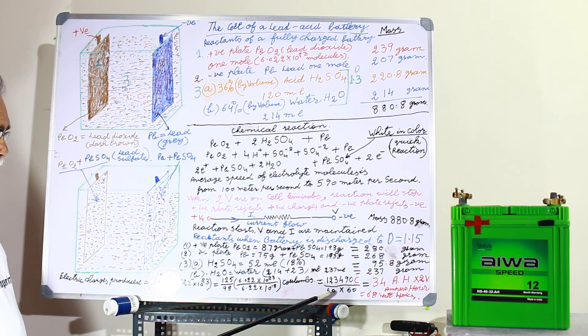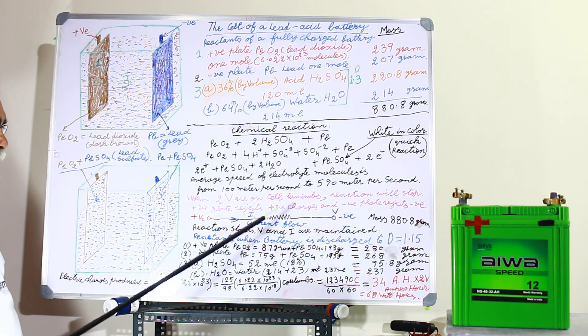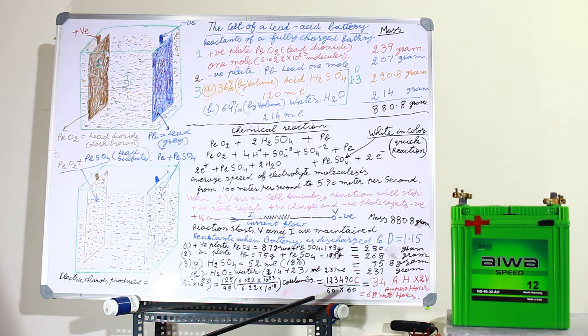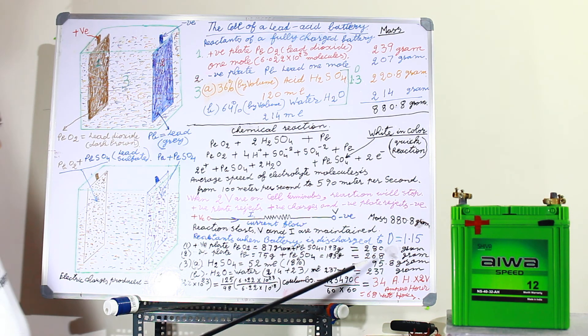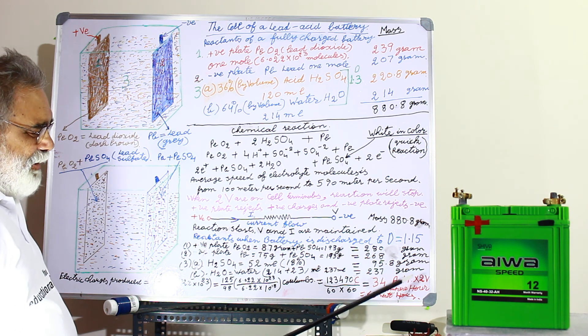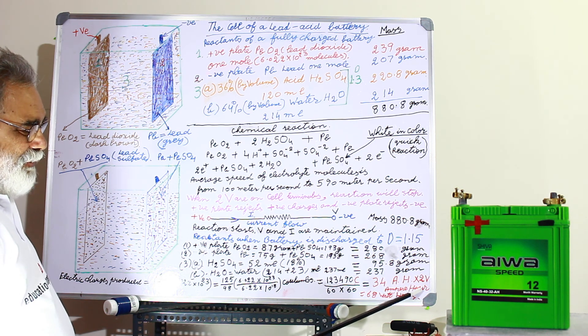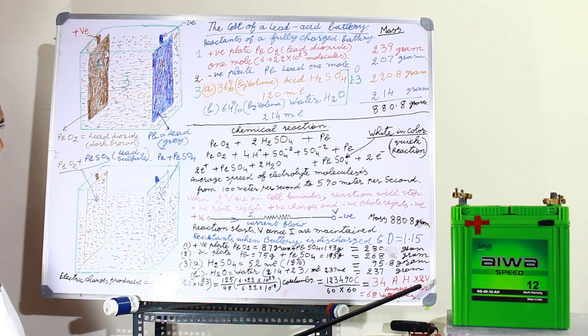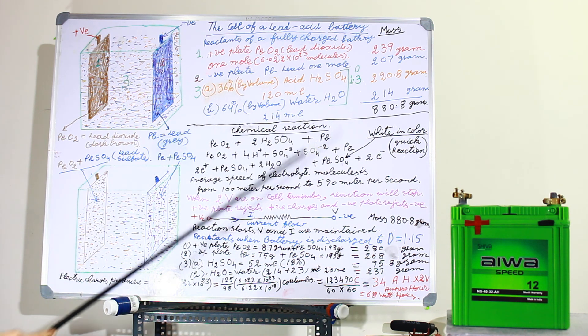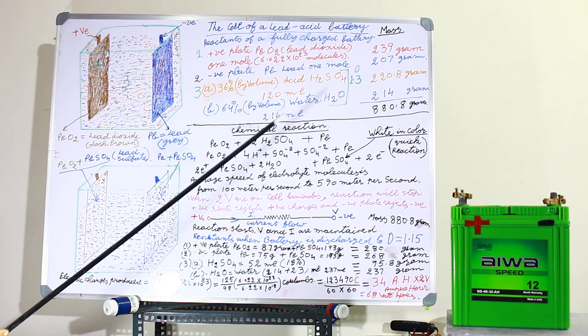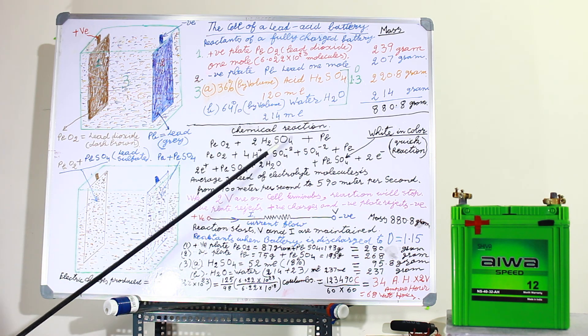And these coulombs, if we pass through a circuit, then one coulomb charge will produce 1 ampere. Now we divide by 60 into 60, means 1 hour. So we will get 34 ampere hour capacity. But this is 2 volts. If we multiply by 2 volts, we will get the energy: 68 watt hour. That is the energy that will be produced by this system.